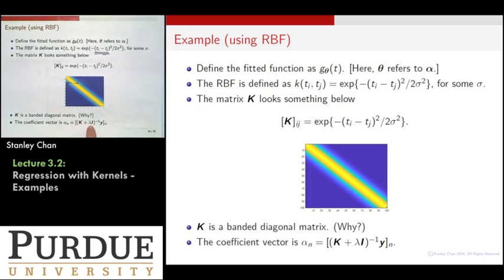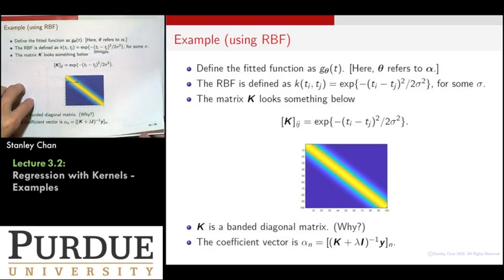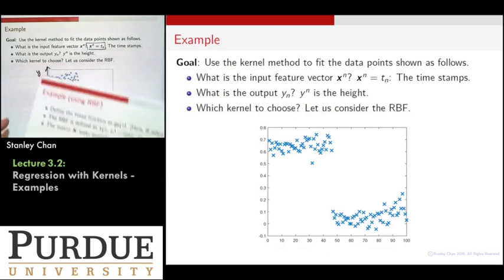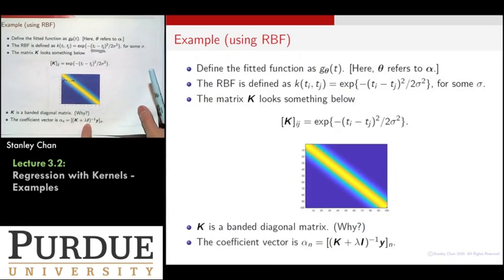You have this kernel now. Then what? Then you calculate this inverse. You have the y's. Y would be the values here. In the previous slide, these values, they're the y's. You have the y's, you have the k's, you plug in a lambda, you get the alpha's, and then you get the solution. You get the theta.